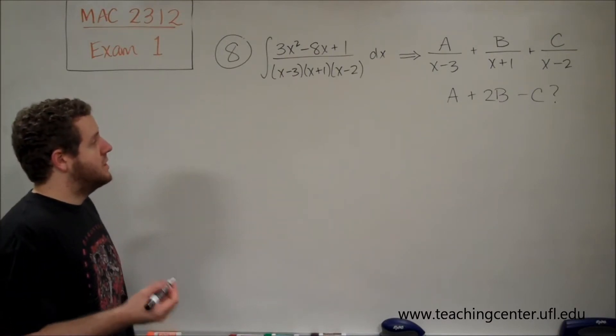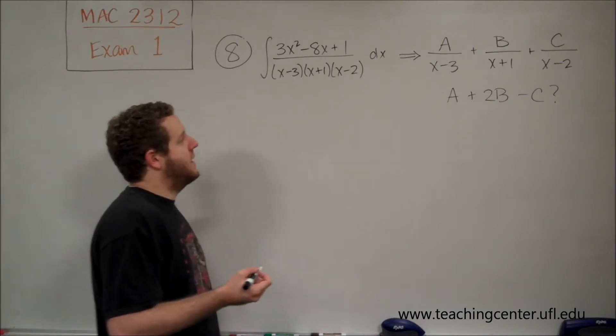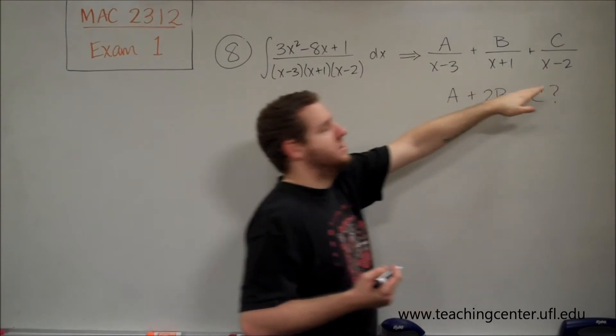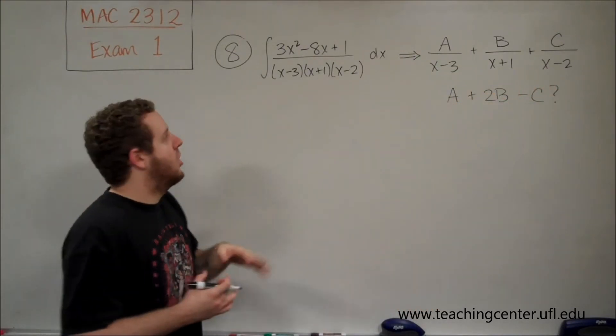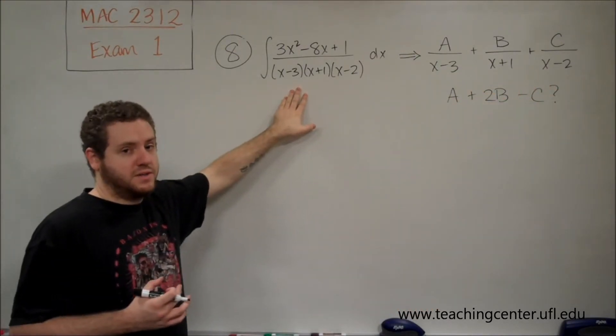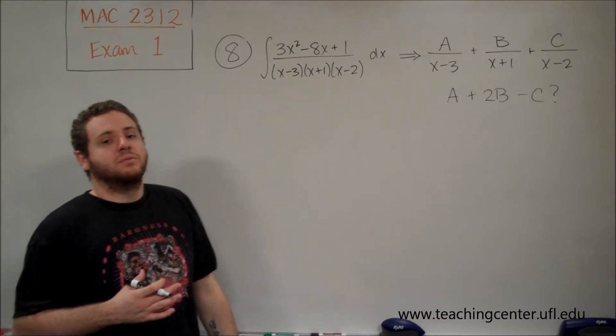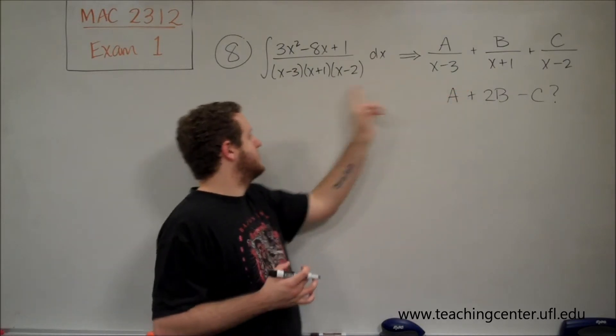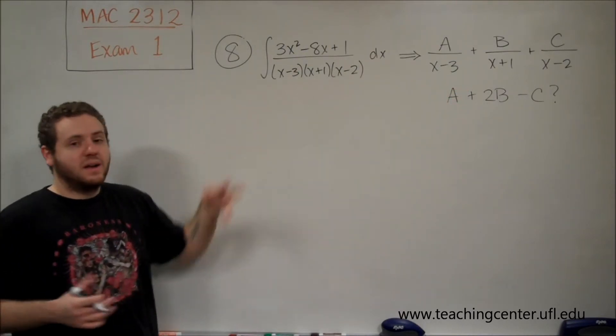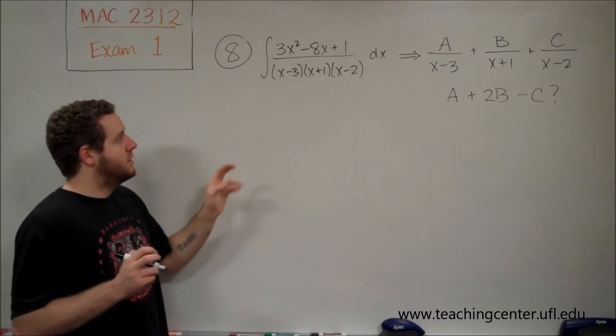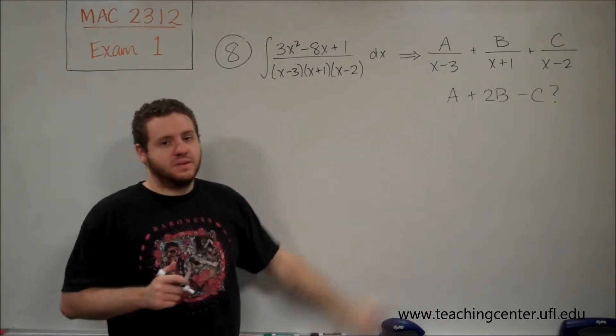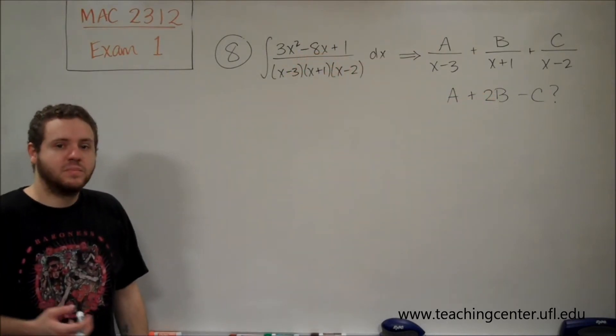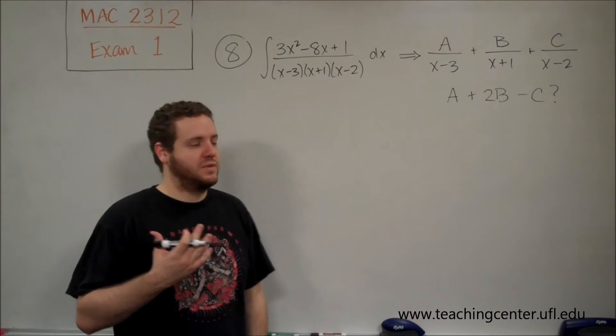So, in doing partial fractions, remember that when you have it set up like this, these three terms added together are equal to the entire fraction. So, you're kind of always working in reverse. Like, if I had three fractions that had each one of those terms as the denominator, if I got a common denominator, it would be all three of those things, and then if I added those three together, I should end up with whatever's up here. So, you're basically doing that process when you do partial fractions.